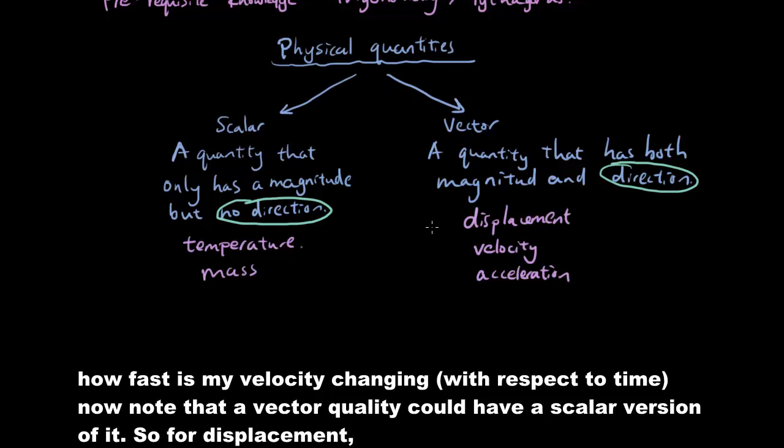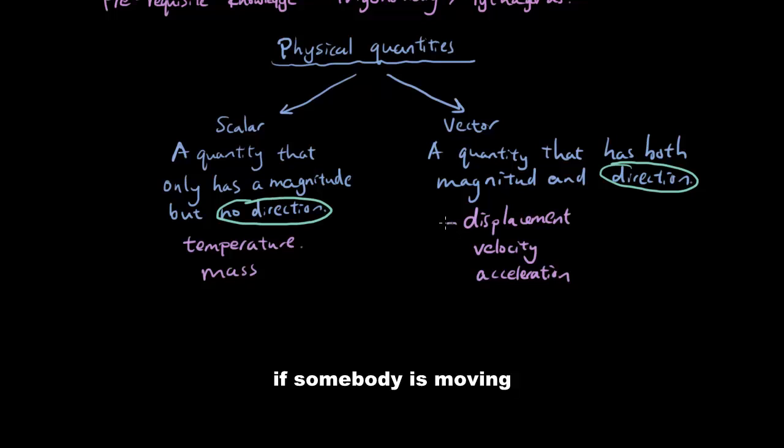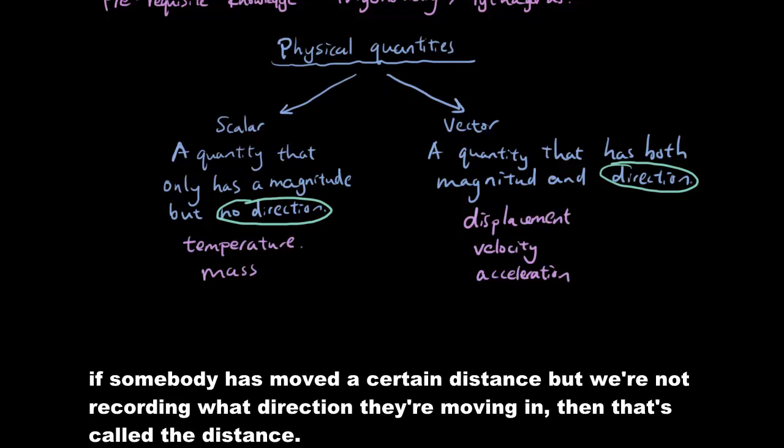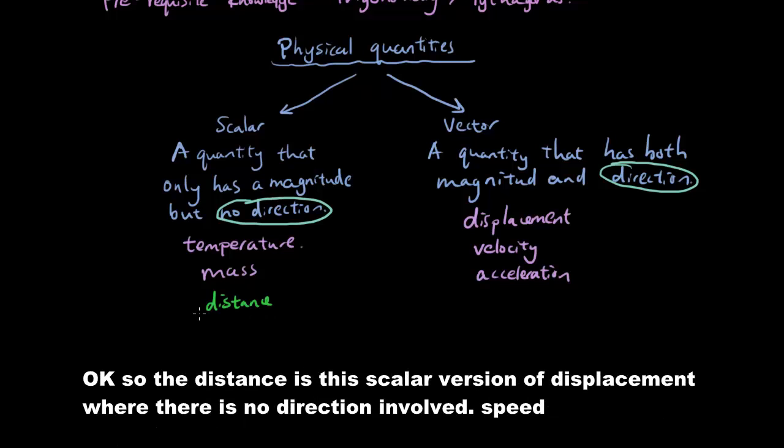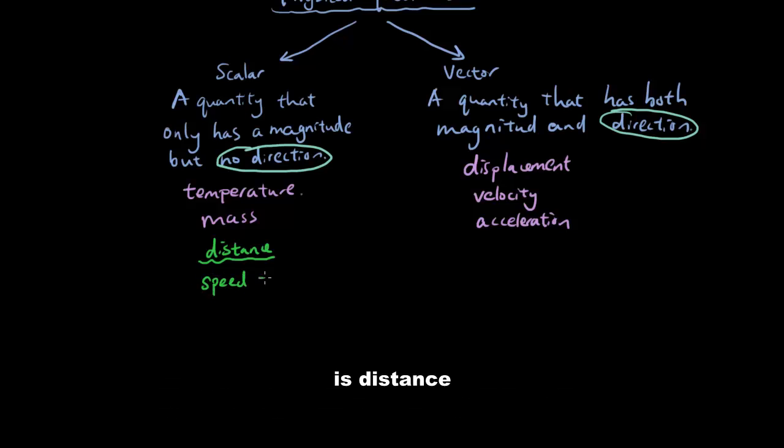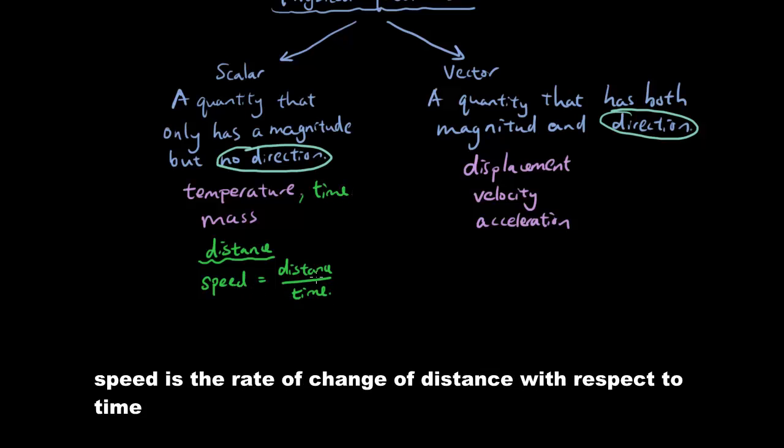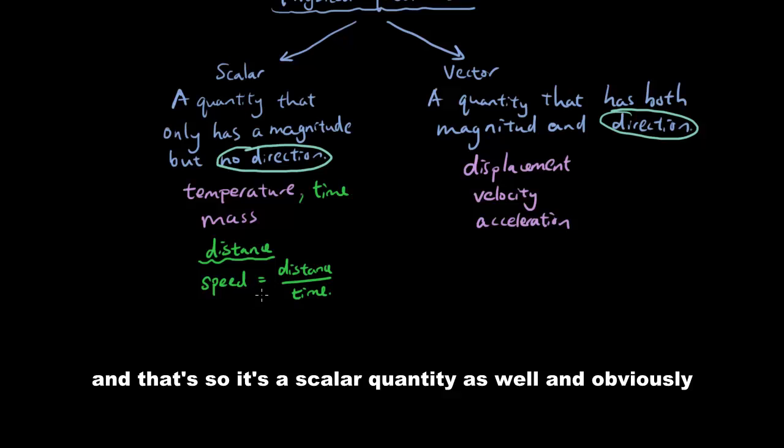Note that a vector quantity could have a scalar version of it. So displacement, if somebody has moved a certain distance, but we're not recording what direction they're moving in, then that's called the distance. So the distance is the scalar version of displacement, where there is no direction involved. And then speed is distance over time. And by the way, time is a scalar quantity as well. So speed is distance over time. So it's the rate of change of distance with respect to time. And so it's a scalar quantity as well.